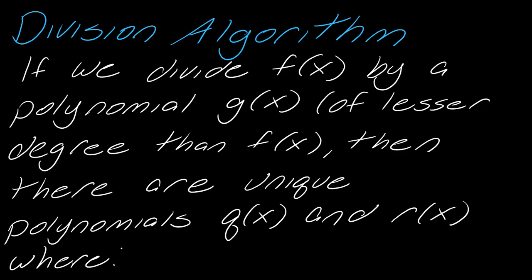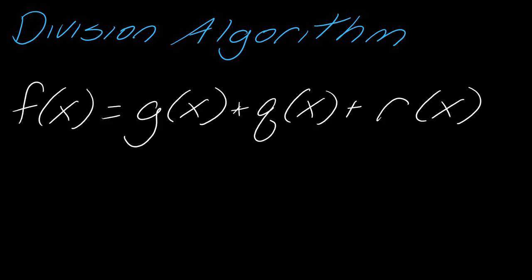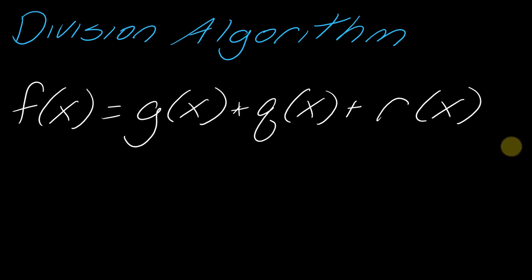So the division algorithm — there's a lot of words here — but let's say I'm dividing f(x) by g(x). g(x) is some polynomial that is of lesser degree than f(x). When you do this, f(x) divided by g(x), you get two unique polynomials, q(x) and r(x), so that you can rewrite f(x) like this: f(x) equals g(x) times q(x) plus r(x). This is just another way of expressing the results of your division. If you're scratching your head, don't worry, we'll make sense of it in this video.